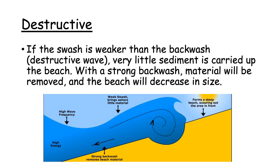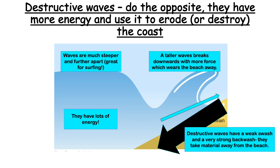Destructive waves are the opposite — the swash is weaker than the backwash, so very little sediment is carried up the beach, while the strong backwash removes material from the beach and therefore the beach decreases in size. Destructive waves have more energy and use that energy to erode or destroy the coastline. The waves are much steeper and further apart, which is great for surfing. A taller wave breaks downwards with more force, which wears away the beach. The swash is very weak and can't carry sediment up the beach, whereas the backwash is very strong and takes material off the beach, destroying it.